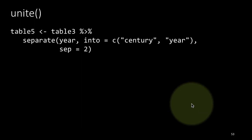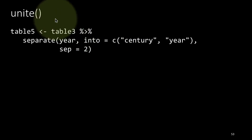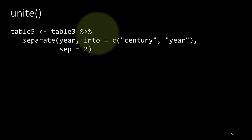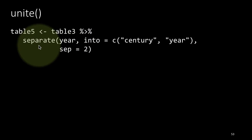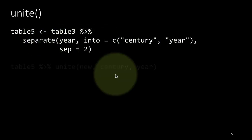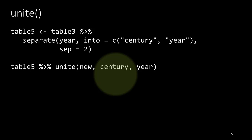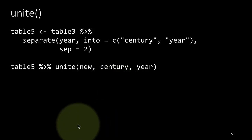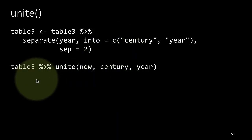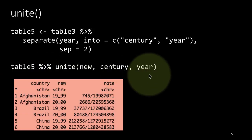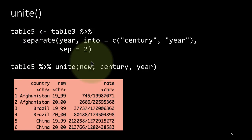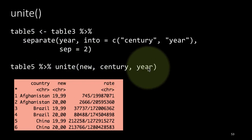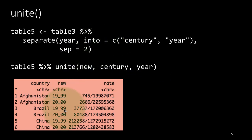The opposite of separate is a function called unite. As you can guess, unite takes a number of columns and combines them — smooshes them together — into one column. We create table5 as table3 piped to separate(year, into = c('century', 'year'), sep = 2), giving two character columns called century and year. If we want to unite them back, we say: table5 %>% unite(new, century, year), where new is the name of the resulting column.